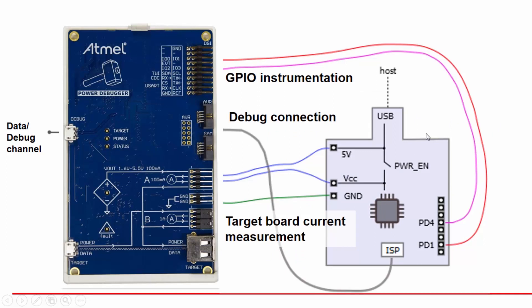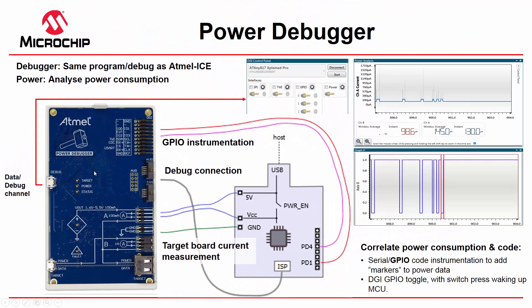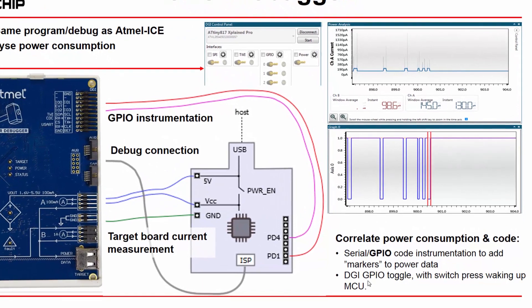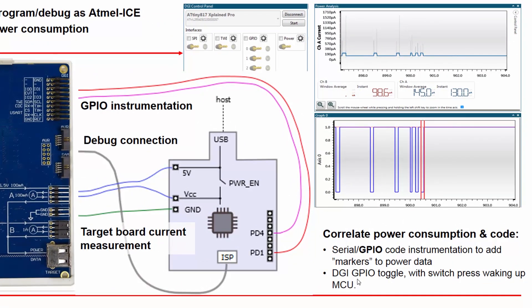If we have a target such as this board here, which looks like an Xplained Mini, we can make some connections to measure the board's power consumption. We can still have a debug connection through to Atmel Studio, or a third-party IDE, and we can also have some GPIO instrumentation. For example, using the DGI GPIO, we can instrument the code to add markers for power consumption, toggling the DGI GPIO along with a switch press, which correlates with the power consumption of the MCU waking up.